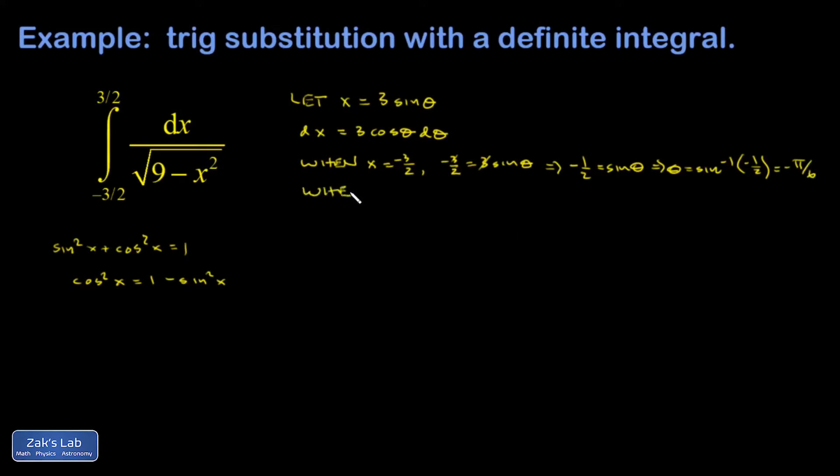A similar calculation for the upper limit, I'm just going to skip a step this time. Theta is the angle whose sine is 1 half, which gives me pi over 6. So when I transform this integral, I'm going to have new limits.